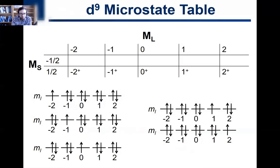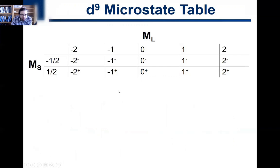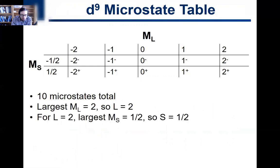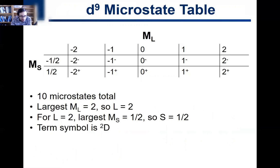Now let's do D9. D9 looks very similar. You just have one hole. You can construct the microstate table: 10 microstates total, largest M sub L is 2 so L equals 2, and the largest M sub S is one half so S equals one half. Again, that gives the doublet D term symbol.